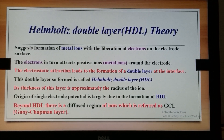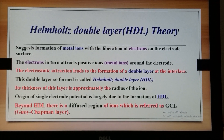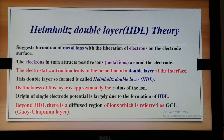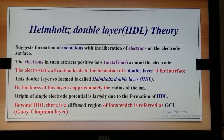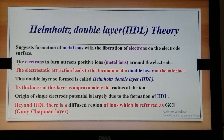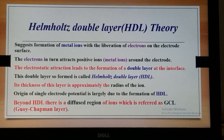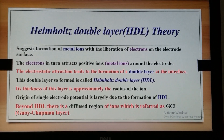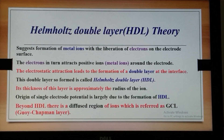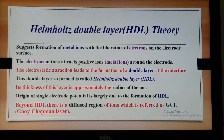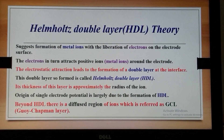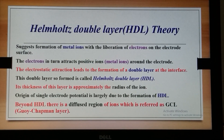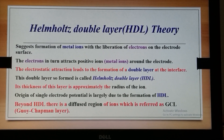Then the electrons accumulate on the surface of the electrode, which in turn attracts the positive ions — that is the metal ions — around the electrode. The metal ions are held by the electrons with the help of electrostatic force of attraction, which gives rise to a double layer at the interface, called the Helmholtz double layer (HDL).